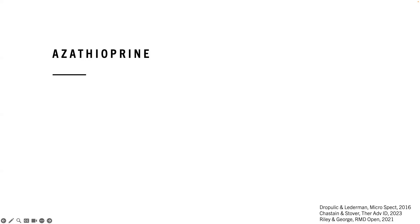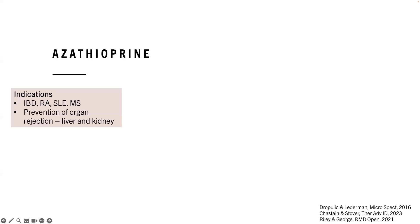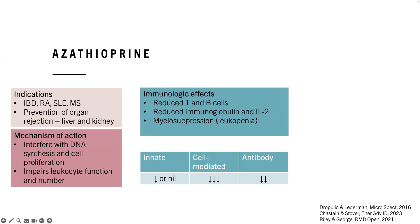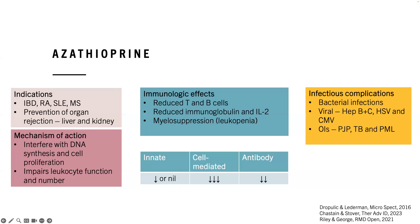The anti-metabolite drugs include azathioprine and MMF, along with methotrexate. Azathioprine is used for prevention of organ rejection and autoimmune diseases including IBD, rheumatoid arthritis, lupus, and MS. It interferes with DNA synthesis and cell proliferation and impairs leukocyte function and number. The immunological effect is reduced T and B cells — mostly cell-mediated immunity, little or no effect on innate immunity, but also a reduction in antibody. Myelosuppression is a key side effect. Infectious complications include bacterial infections, viral infections (hepatitis B and C, herpes viruses), and a low — but present — risk of PCP, TB, and PML.